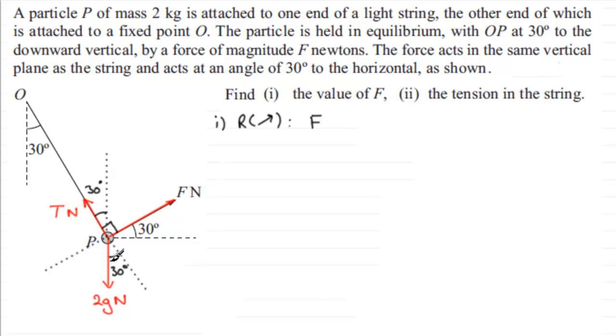T doesn't enter the equation because it acts perpendicular, but the 2g Newtons, the weight of the particle, is inclined to this line. It's not perpendicular, so we split this into two components. One will be down in this direction and the other will be down in this direction. The one in this direction we're not interested in because it's perpendicular to this line.